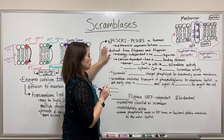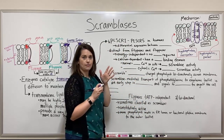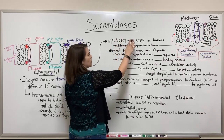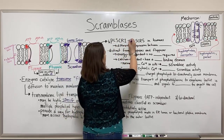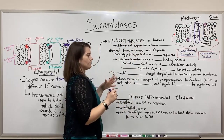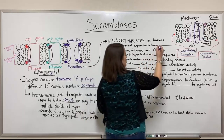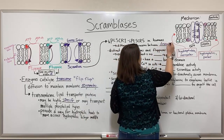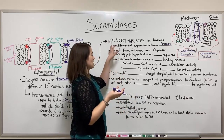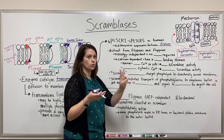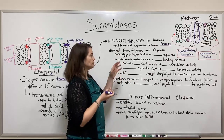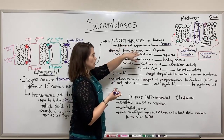In humans, there are five different scramblases. We call them HPLSCR1 through HPLSCR5. They have differential expression between tissues — some are expressed in many different tissues, whereas for example HPLSCR2 has only been found to be expressed in the male testis.